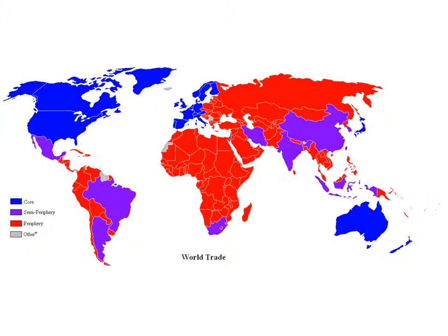A long time ago, the core looked very different — it was pretty much just England, France, Germany, and the Netherlands. That small area was the core, and the rest of the world was mostly periphery, though there were some other places that could be classified as core countries in their own regions.